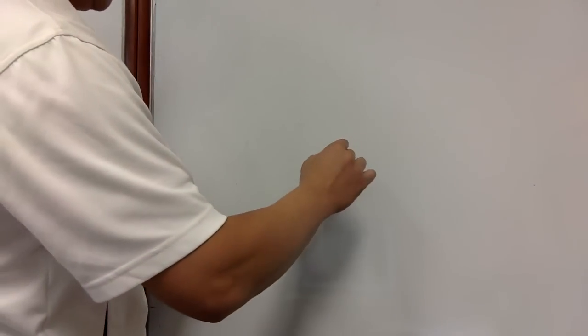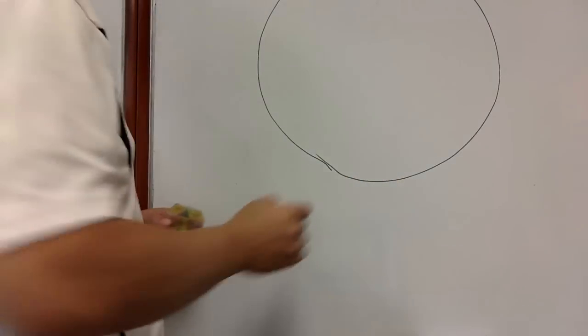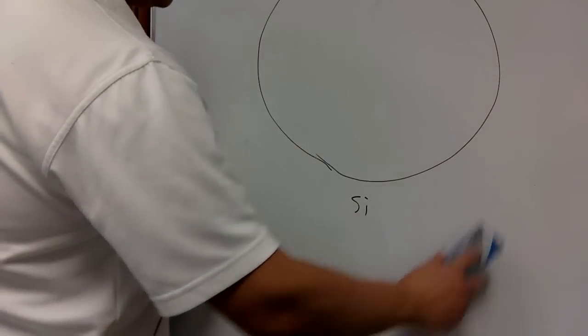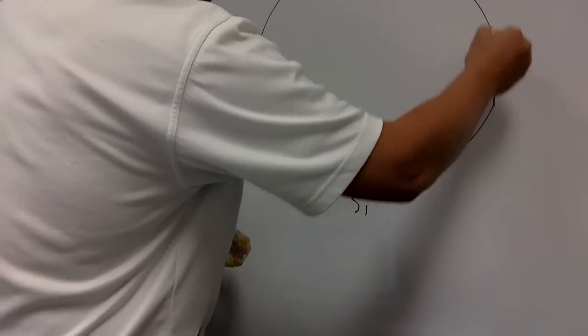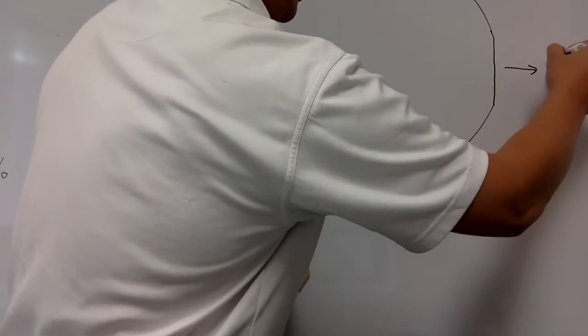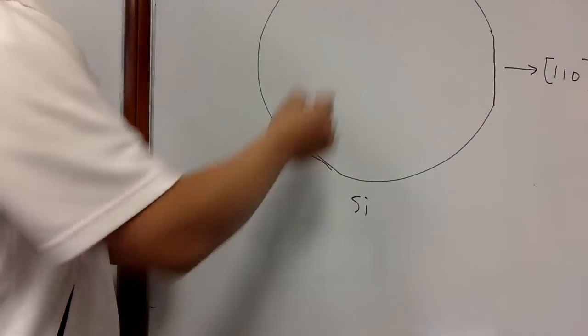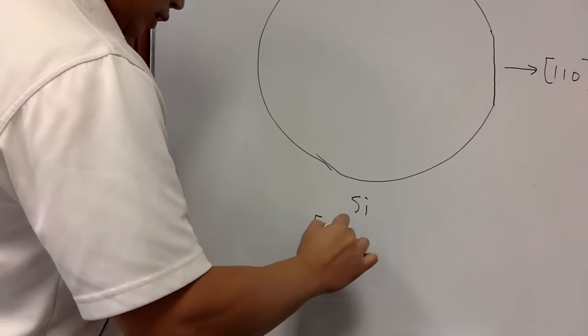Let's start from a very simple problem. You have a single crystalline wafer, and when you find the wafer you know that it has a flat in this corner. You are told that this direction is [110], and it's a (100) wafer.